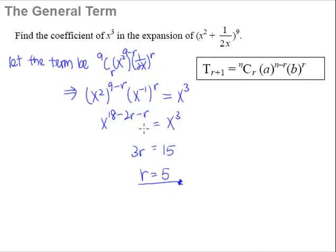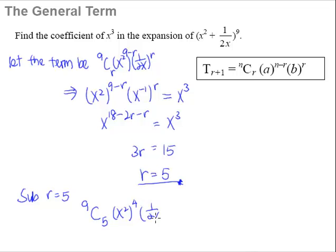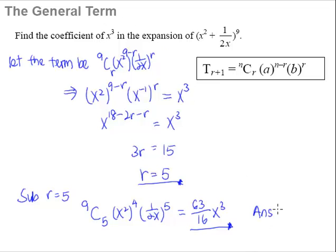R equals 5 is not our final answer — it tells us that when R equals 5 we get x to the power of 3. What we need to do next is substitute R equals 5 into our term. So we have 9C5, (x²) raised to the power of 9 minus 5, which is 4, multiplied by (1/2x) raised to the power of 5. Working this out with the help of a calculator, we get 63 over 16 · x cubed. The coefficient of x cubed is therefore 63 over 16.